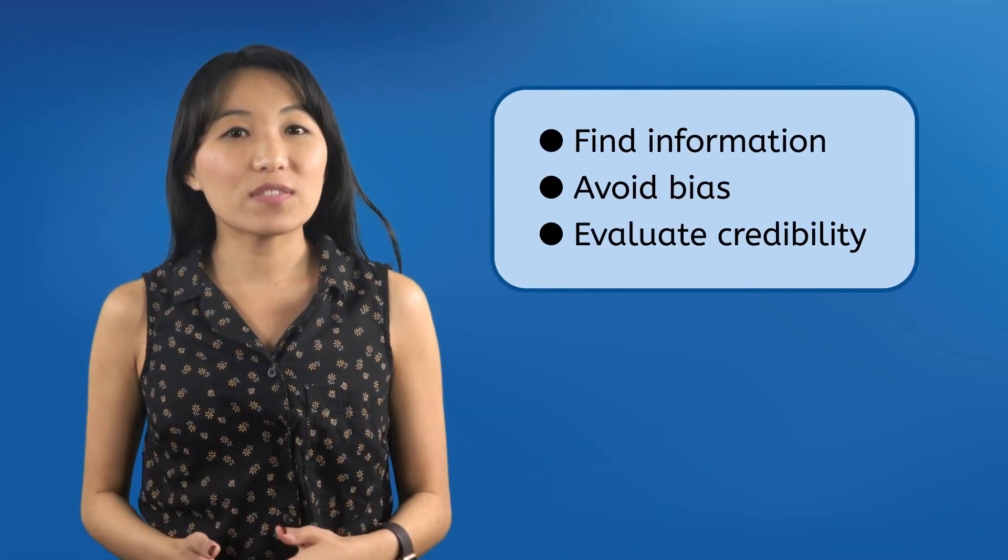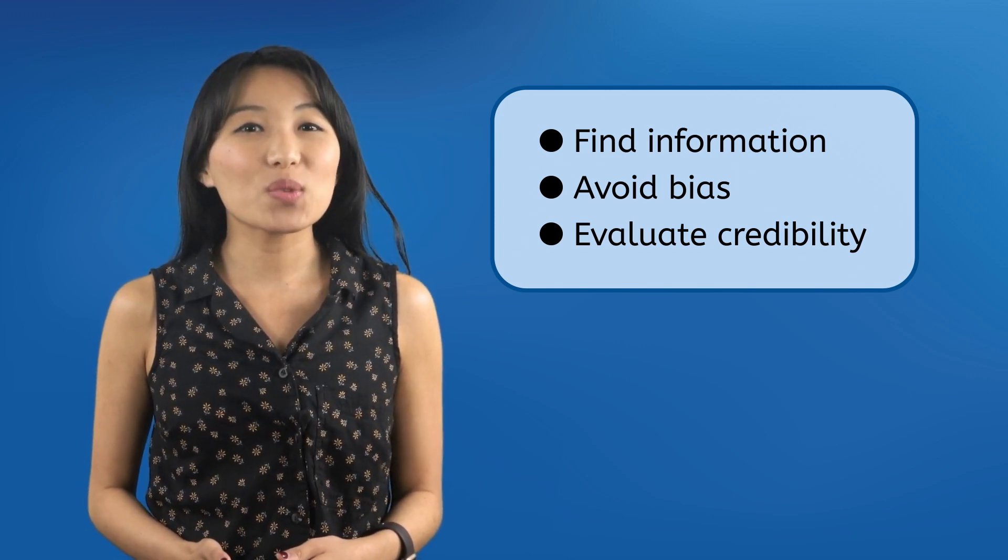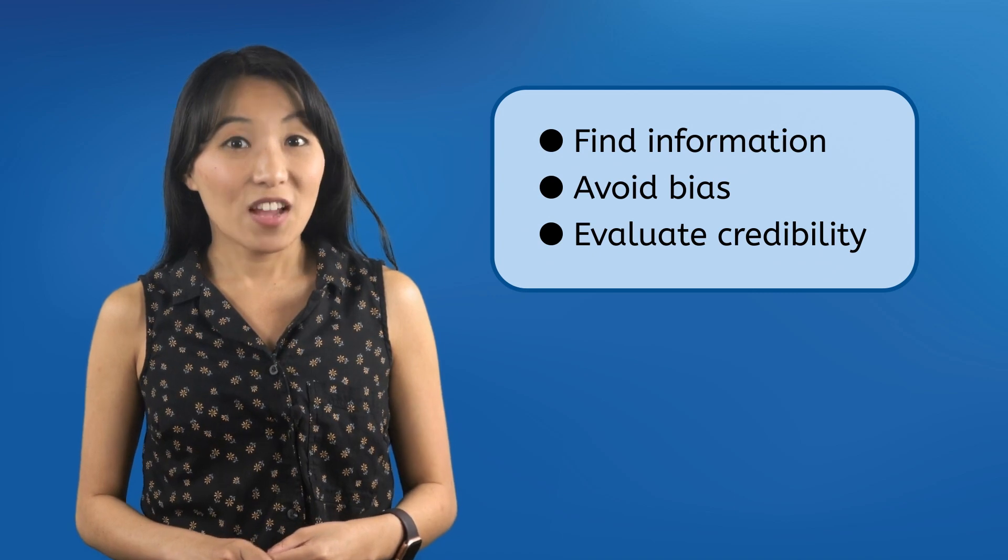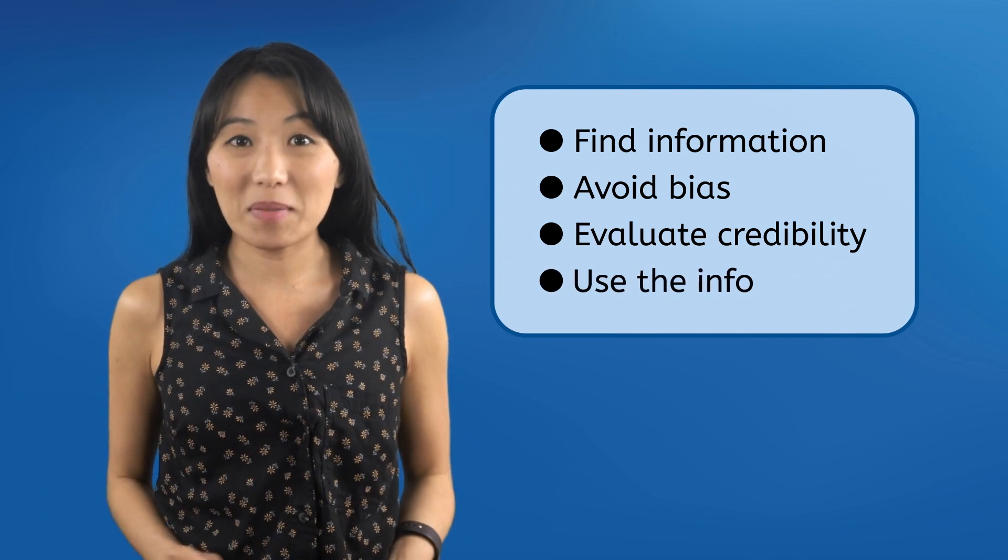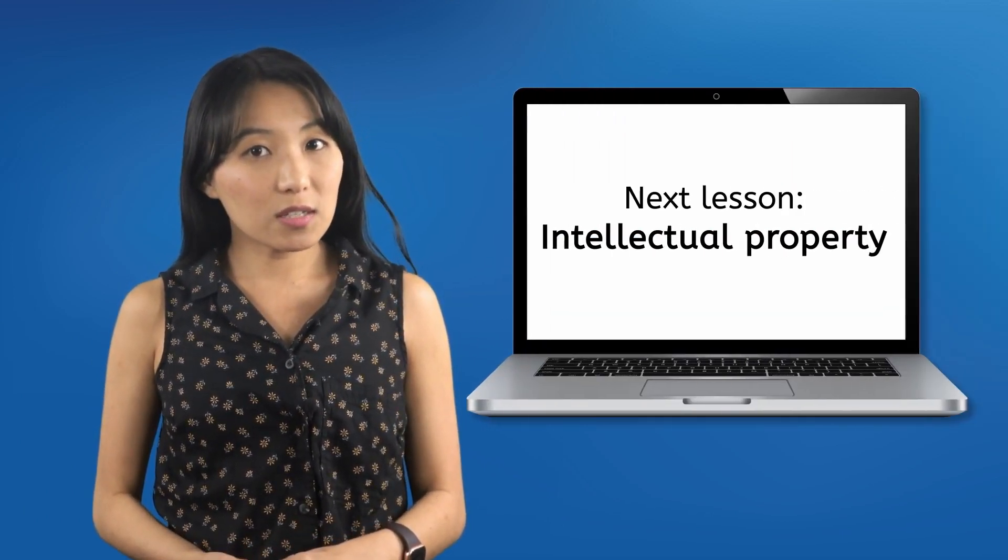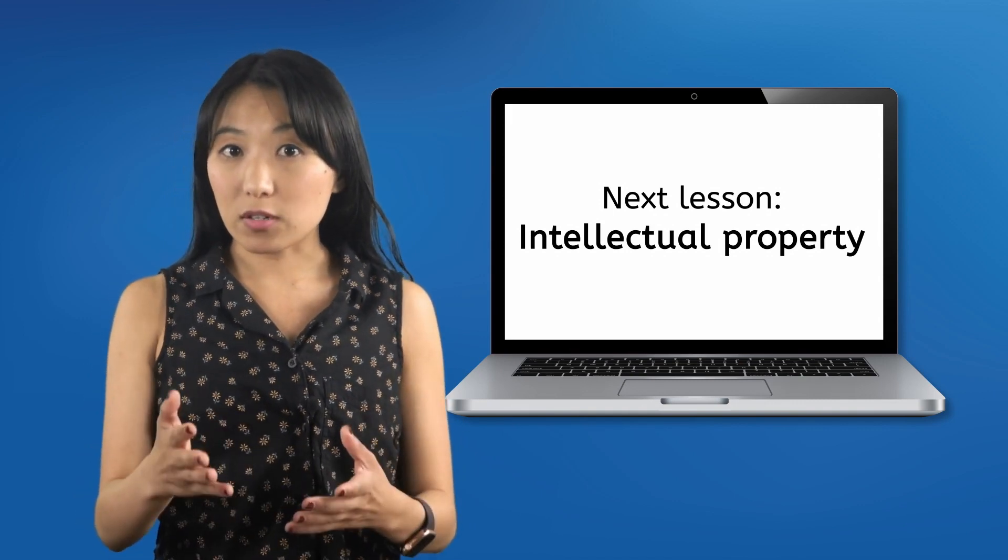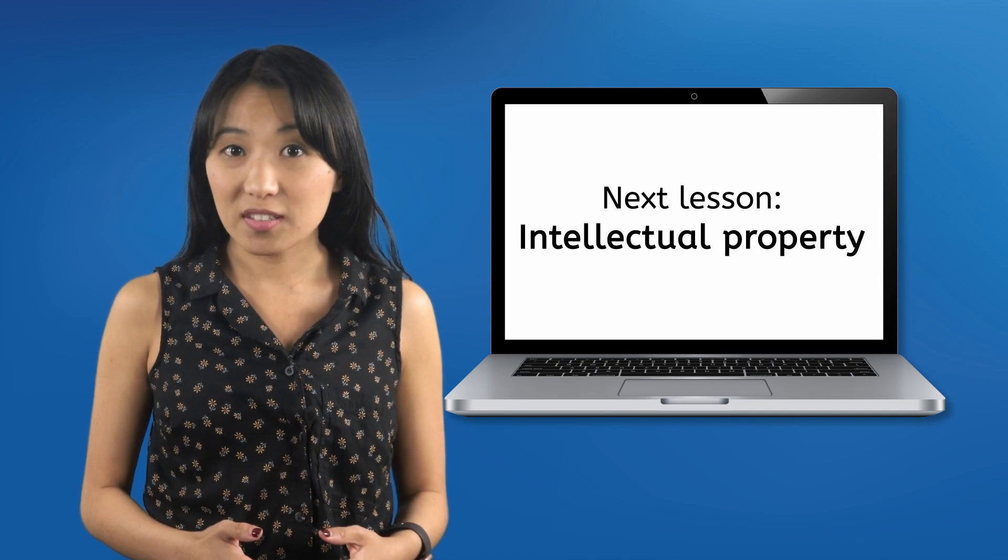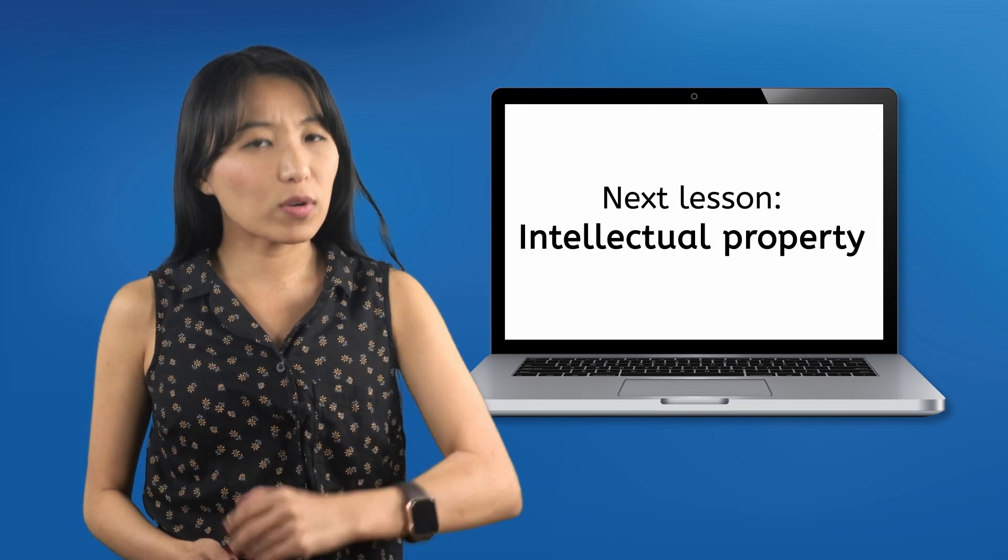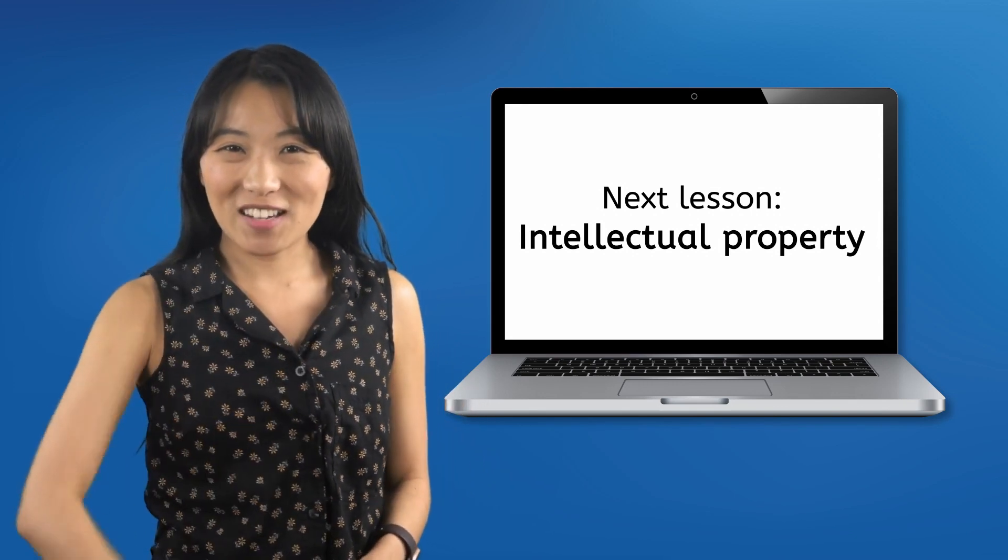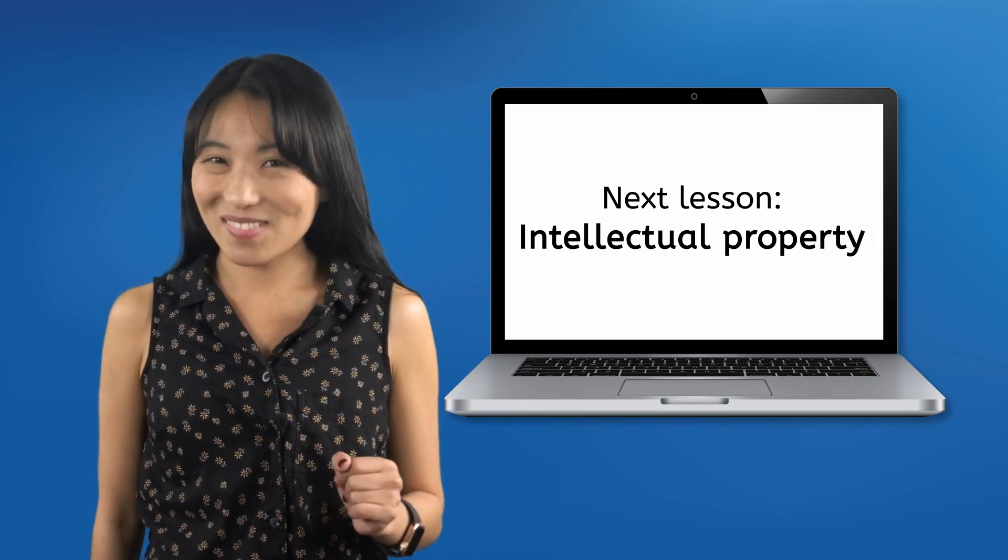At this point, we know how to find information sources, how to keep bias from hurting our search for information, and how to evaluate whether sources of information are credible enough to trust. There's only one thing left to do. The thing we wanted to do all along. Use the information we found. But those ideas and information sources are intellectual property that belongs to their creators and we wouldn't want to steal their hard work. In the next lesson, you'll learn how to respect others' intellectual property and give credit where credit is due. Until then, remember, your brain is the smartest computer you'll ever have, so keep it charged and never stop updating it. See you next time!